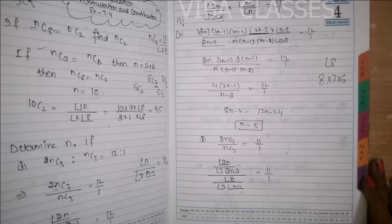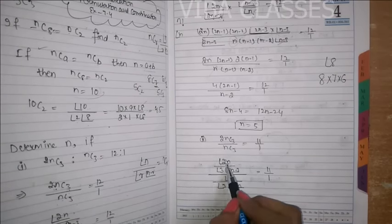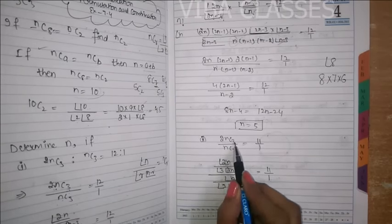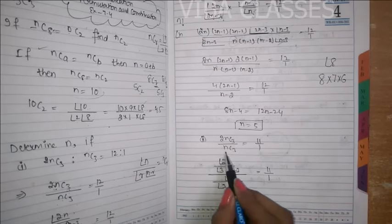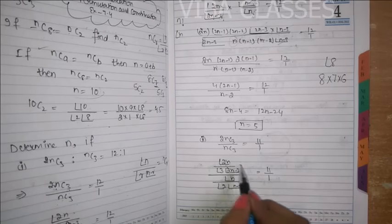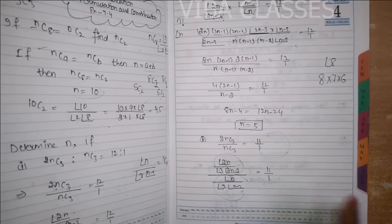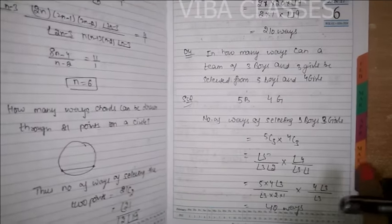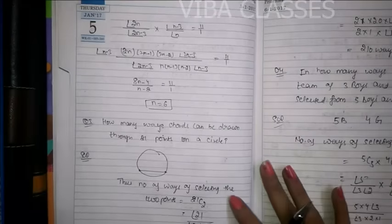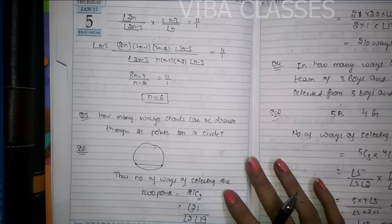Similarly, for the second part, the left-hand side is the same as the first part, but the right-hand side has 11 upon 1. So 2nC3 upon nC3 equals 11 upon 1. You open the formula: factorial 2n divided by factorial r into factorial (n minus r), similarly factorial n, factorial r, factorial (n minus r), equal to 11 upon 1. Factorial 3 cancels out. So you get factorial 2n upon factorial (2n minus 3), into factorial (n minus 3) upon factorial n, equals 11 upon 1.